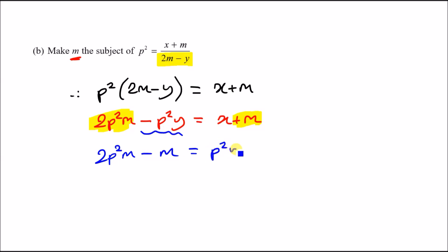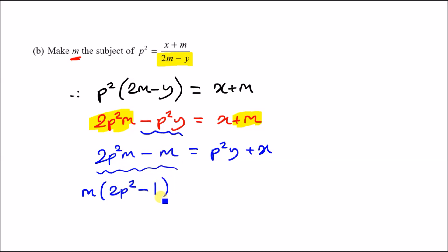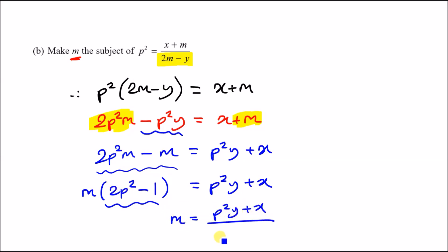To isolate m, take it as a common factor: m(2p² − 1) = x + p²y. Then divide both sides by (2p² − 1) to make m the subject: m = (x + p²y) / (2p² − 1). There are alternative equivalent forms — you could write (p²y + x) or rearrange the denominator as (−1 + 2p²) — as long as the terms and signs are correct. That's question 18 done.